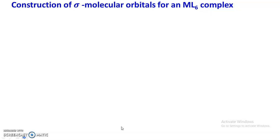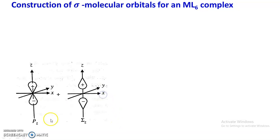As an example, we consider the overlapping between the Pz atomic orbital of the metal ion combining with its matching ligand group orbital, that is Σz. The Pz orbital of the metal ion has two lobes — a positive and a negative sine wave function — oriented along the z-axis. Its matching ligand group orbital is Σz, where positive and negative lobes are also oriented along the z-axis.